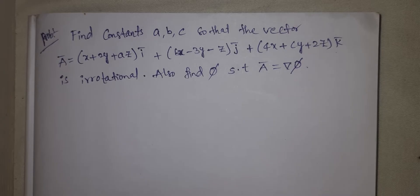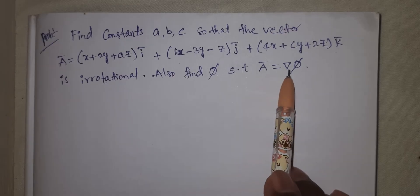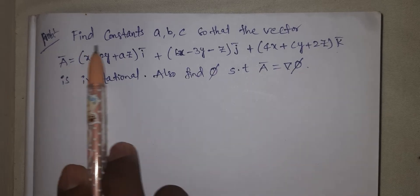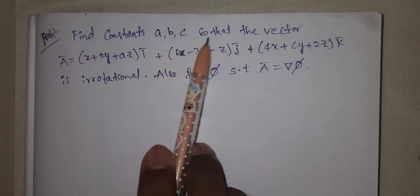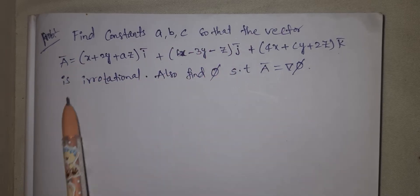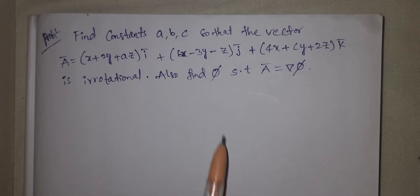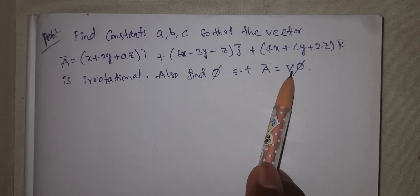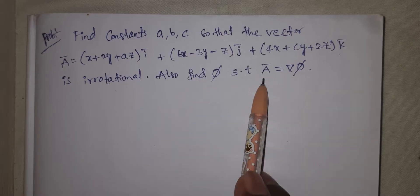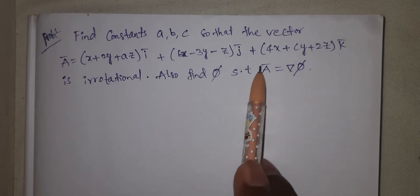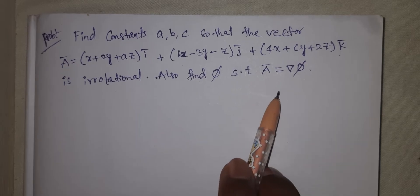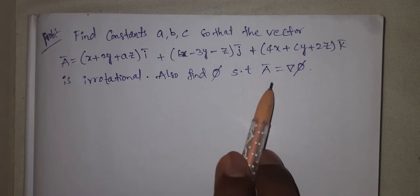We know about scalar potential — A bar equal to del pi, F bar equal to del pi — but we don't know scalar potential. Find constants a, b, c so that the vector A bar is irrotational, and also find pi such that A bar equal to del pi. The scalar potential is mentioned in the question.